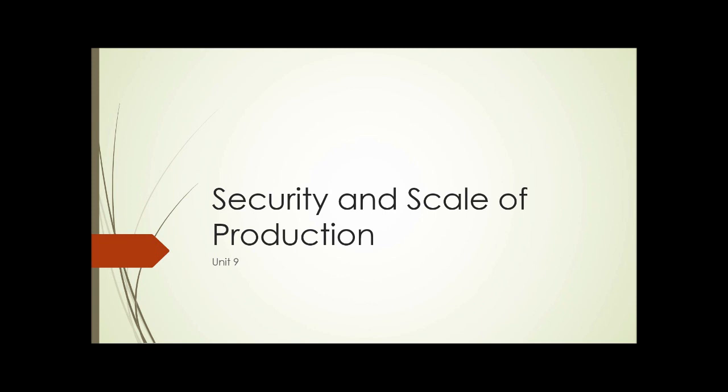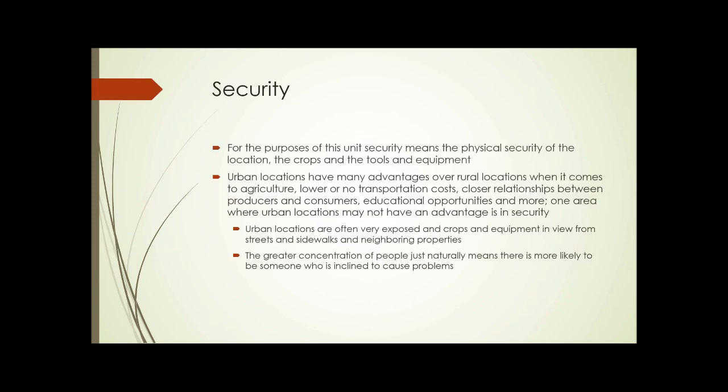Unit 9: Security and Scale of Production. First, we'll talk a little about security in this unit. For the purposes of this unit, security means the physical security of the location, the crops, the tools, and the equipment, as opposed to the food security that we've mentioned before. This is actual physical security.